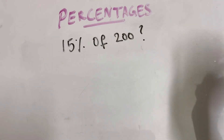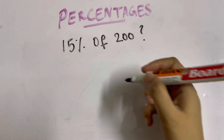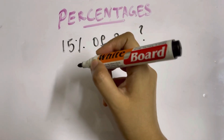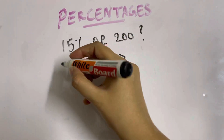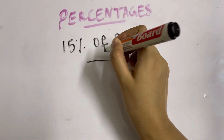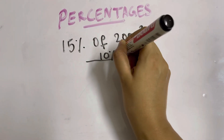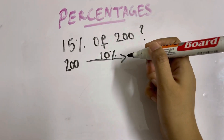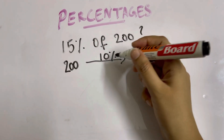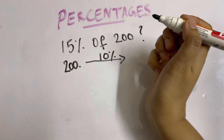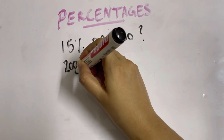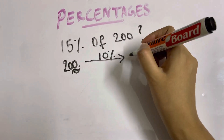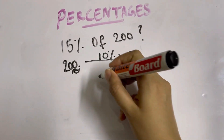Let's calculate it mentally. We are going to take easier percentages to work with. First, we are going to find out 10% of 200. Always take the decimal towards the right side of the number and then move one slot towards the left. So 10% of 200 is 20.